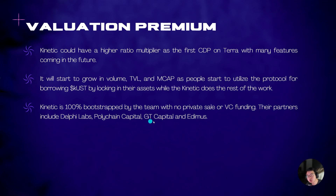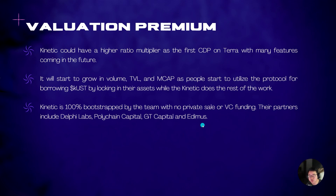Kinetic Money is 100% bootstrapped by the team with no private sale or VC funding, so there are no VCs that are going to be dumping on you. The partners include Delphi Labs, Polychain Capital, GT Capital and Edimus. Just to reiterate, there is no private sale or VC funding. This partnership probably just involves putting in UST to support the lock drop, as well as buying KNTC during the entropy phase to support the protocol launch.